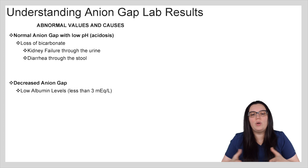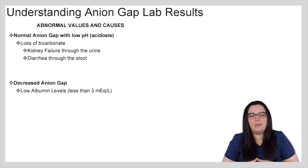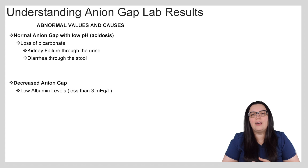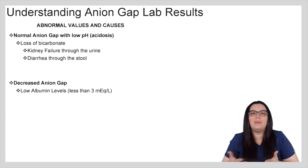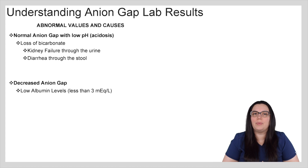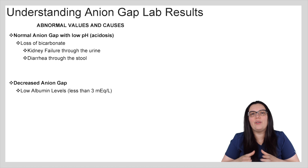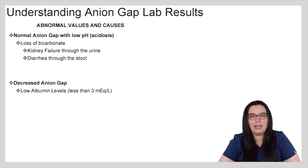Lastly, if you have a decreased anion gap, one of the only reasons is a low albumin level — less than 3 milliequivalents per liter — that can ultimately affect the distribution of your electrolytes and decrease your anion gap.